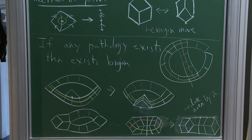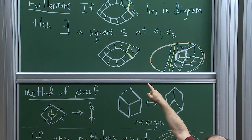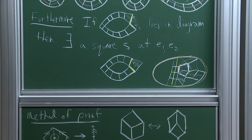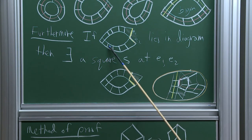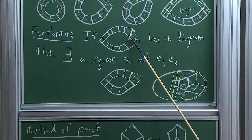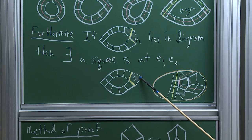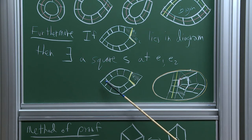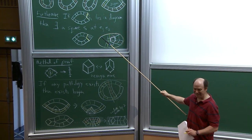Before moving on, we can also pick up the furthermore statement. The furthermore statement says: if you can find a diagram with two dual curves that cross in one spot and then come right next to each other in another spot, then in the cube complex there exists a square S which could have been positioned right there. This essentially follows because you imagine pushing that square further and further to the right until it arrives at the other side — that's the square S the furthermore is insisting on.